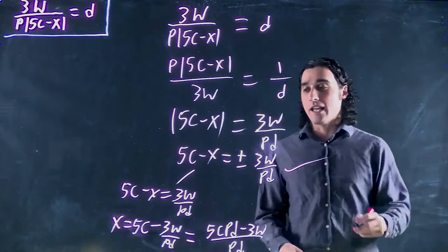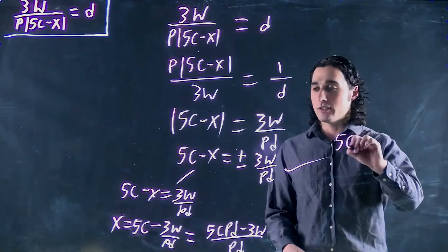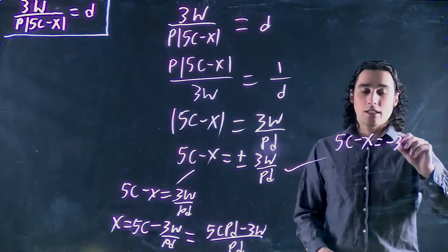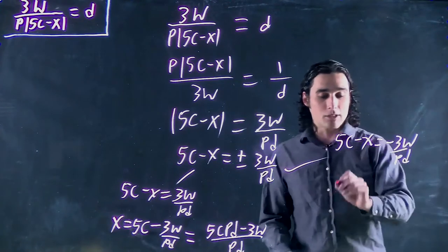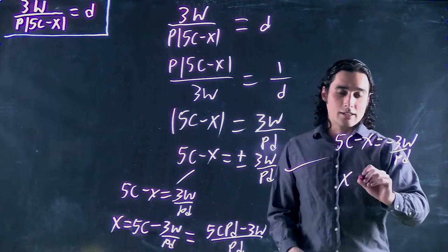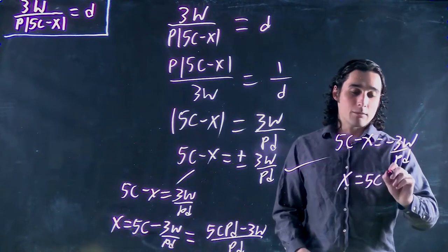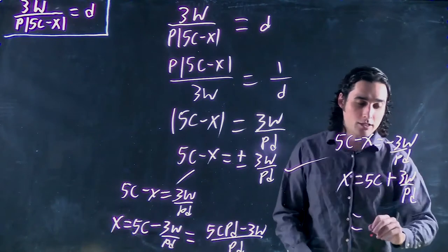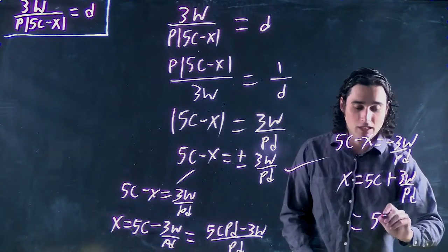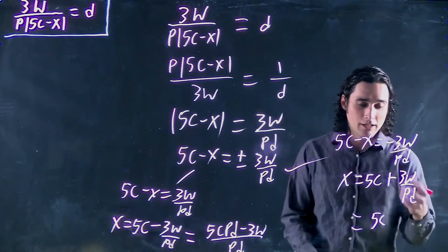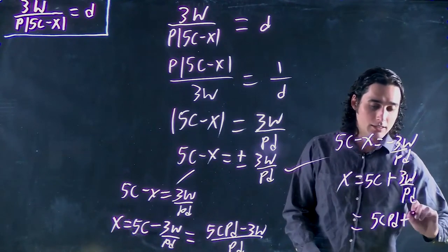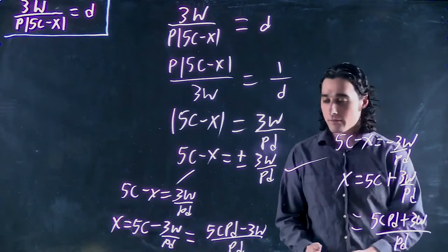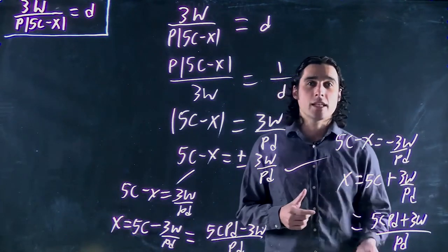Or we can also look at the solution where it's negative. So we get 5c minus x equals minus 3w over pd. The solution is going to be pretty similar. We're going to get x. In this case equals 5c plus 3w over pd. Or again, if we want to clean it up. Or not necessarily clean it up, but put it all under one fraction. We get 5cpd plus 3w over pd. Again, two possible solutions. Thanks.